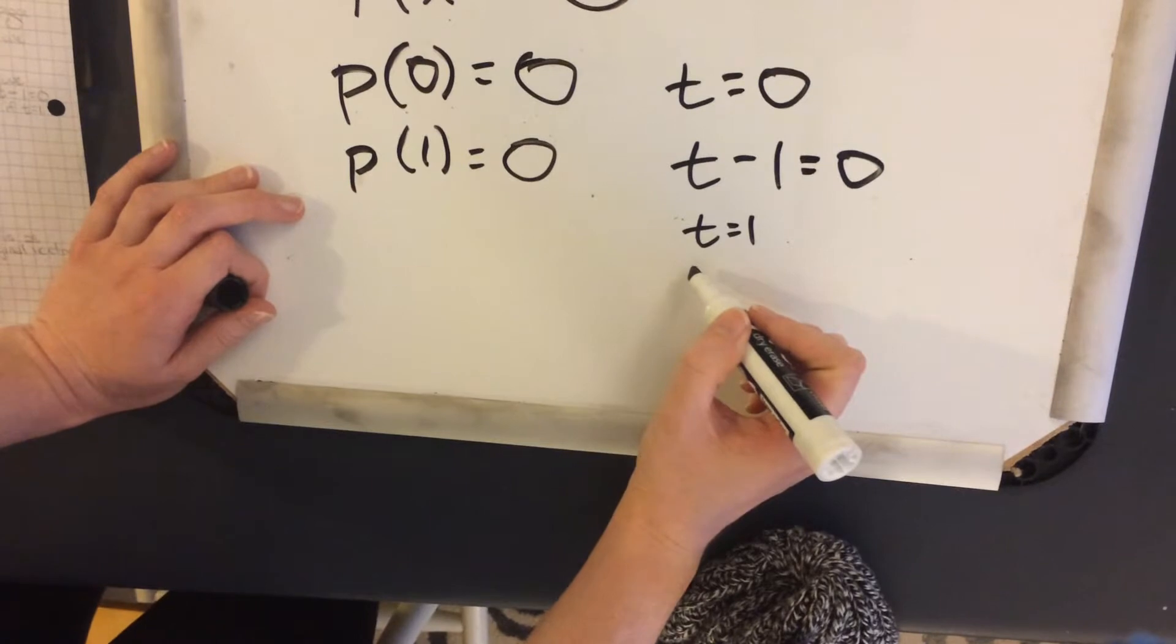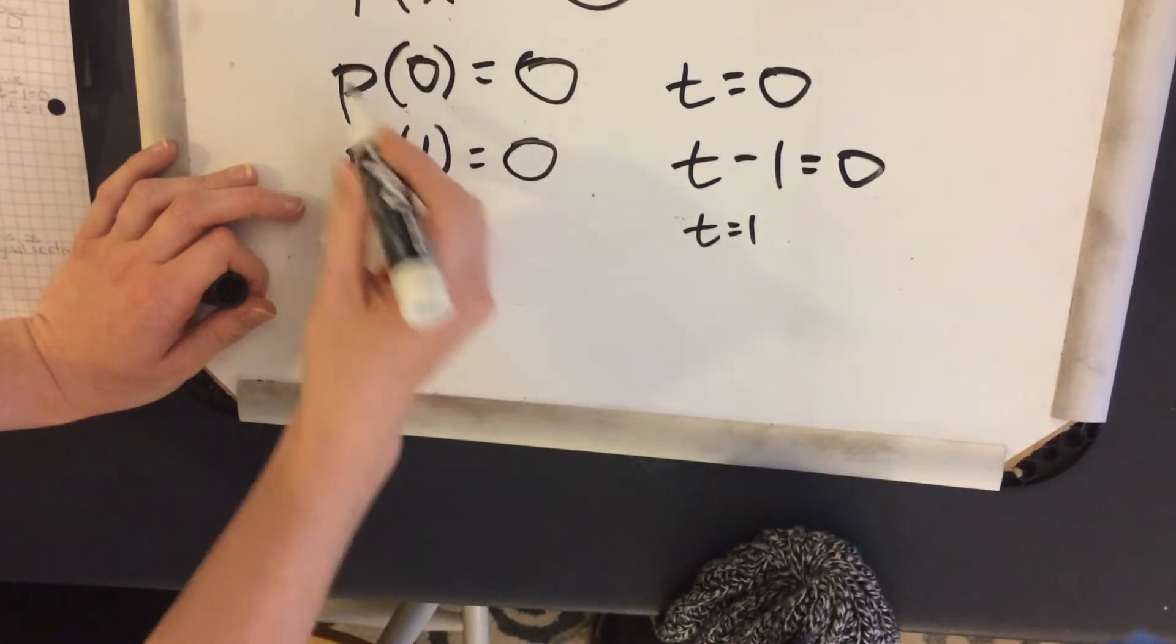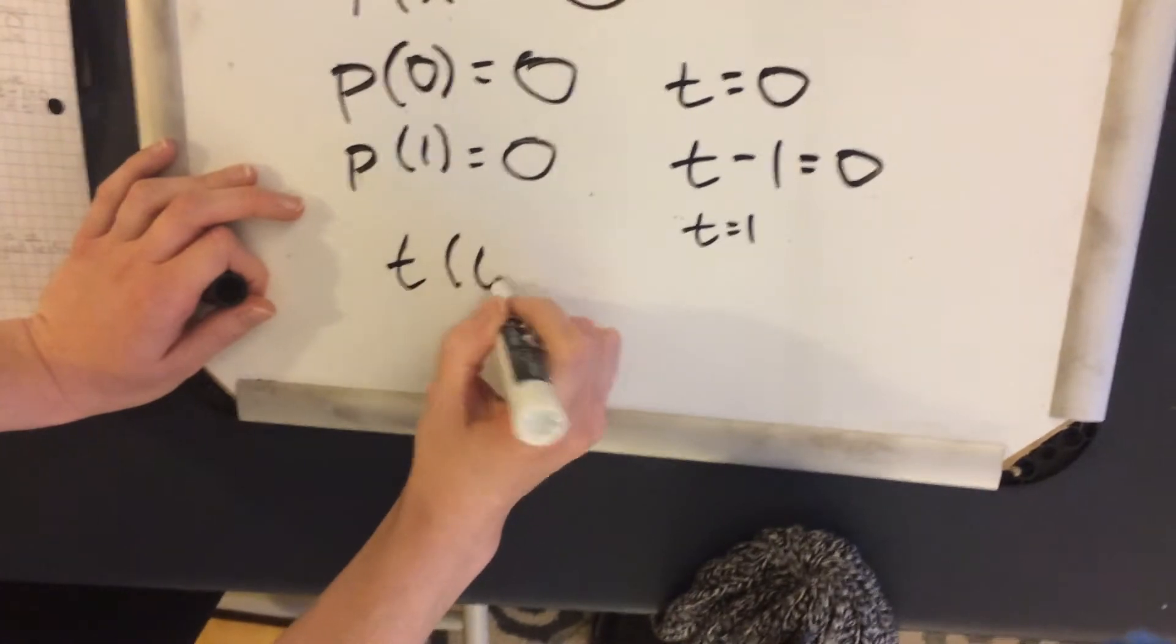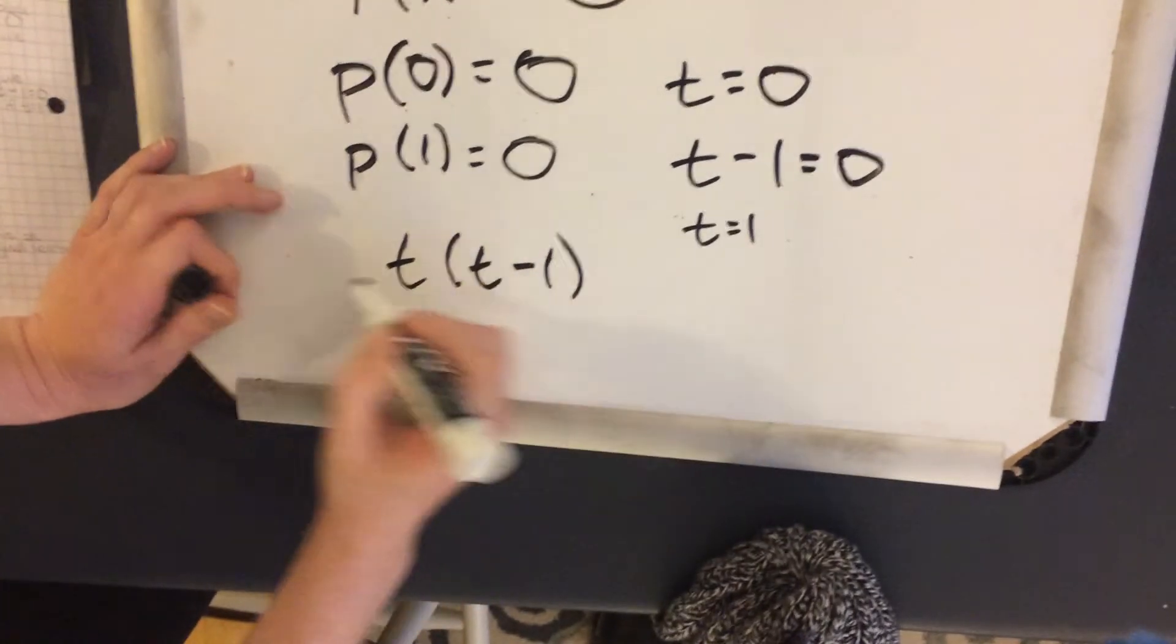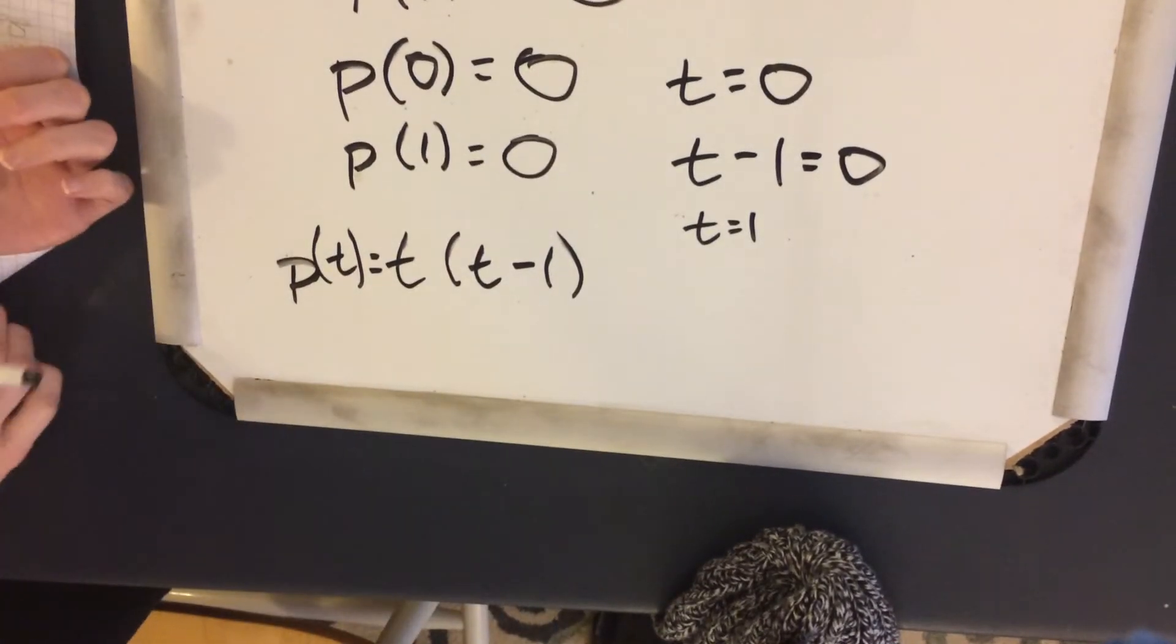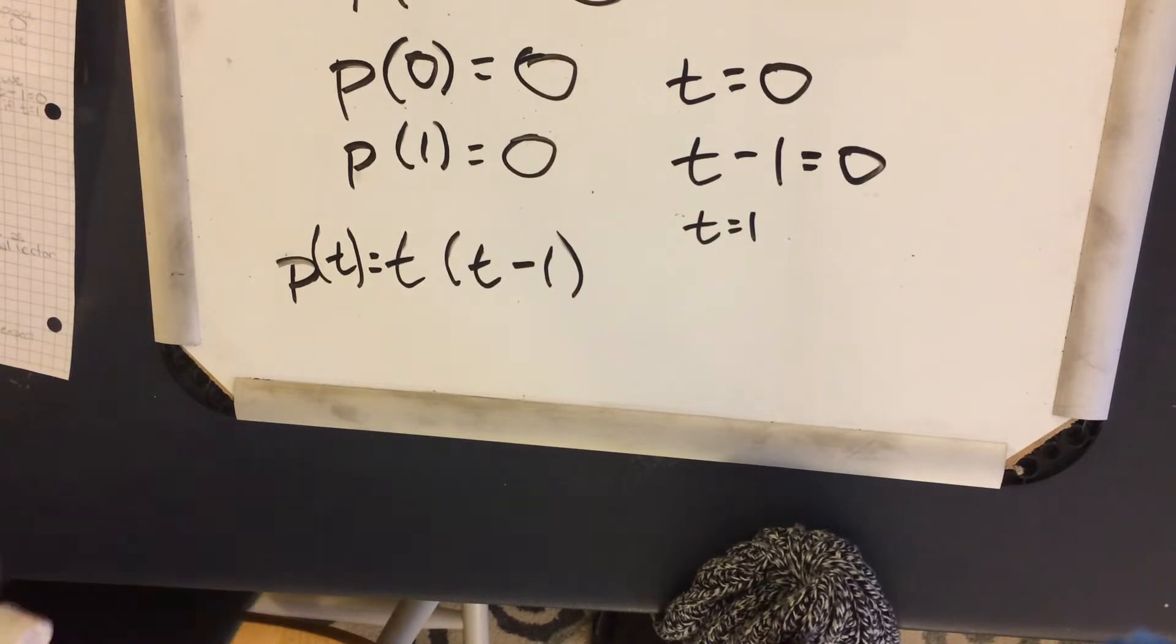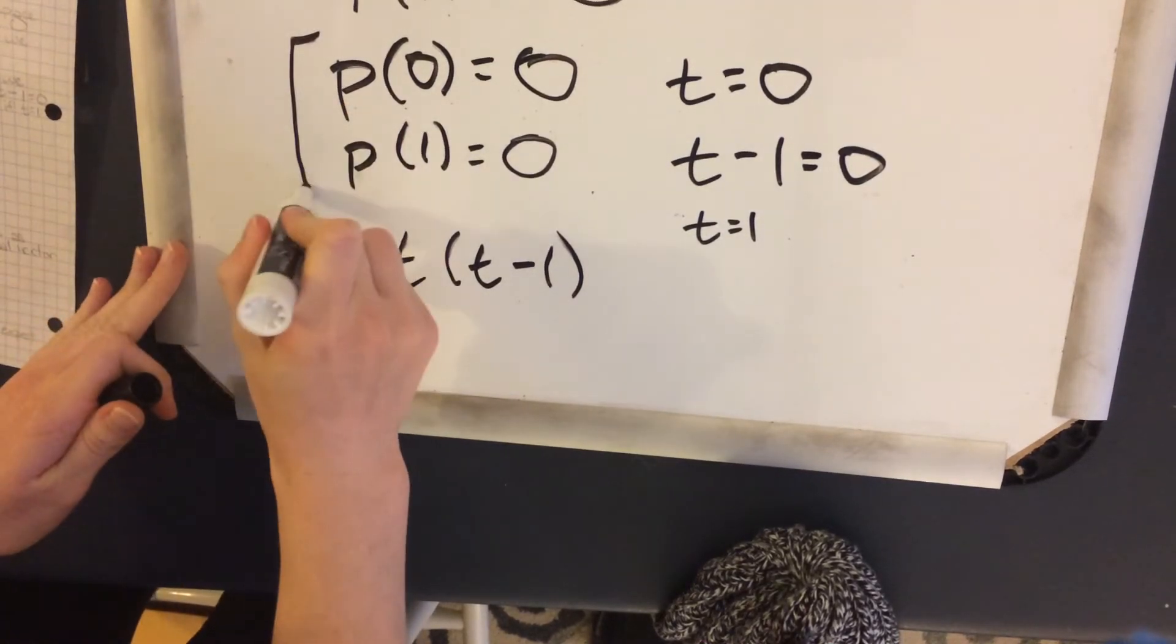Where t can equal zero and get to zero, and t can equal one and get to zero. And a way we can do this is combining these by multiplying them together. So this could be our polynomial p.